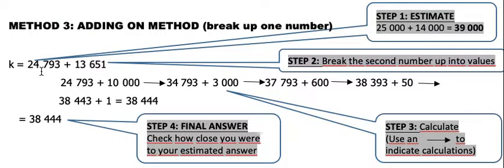24,793 rounded off to the nearest thousand will give me 25,000. 13,651 rounded off to the nearest thousand will give me 14,000. So 25,000 plus 14,000 will give me an estimated answer of 39,000. Now our final answer should be close to 39,000.